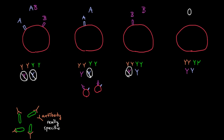What about the reverse — what if we take type A blood and put it into someone with type AB blood? Is this person going to be okay? Actually yes, because he has no antibodies against the A protein, since he has the A protein himself. So even though these two people have different blood types, it's okay for the AB person to receive type A blood, but not the reverse.